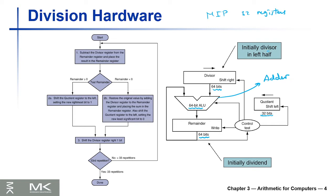We put the divisor in the left half of the 64-bit register — the right half is zeros. The remainder register will initially contain the dividend, and the quotient starts as zeros. The first step in the algorithm is to subtract the divisor from the remainder: R = R − D. If the result is greater than or equal to zero, we put a 1 in the quotient.